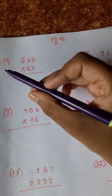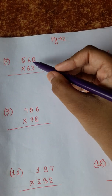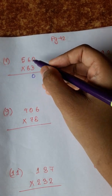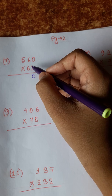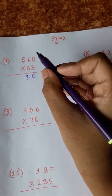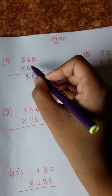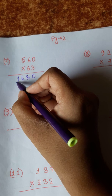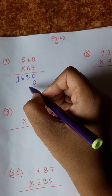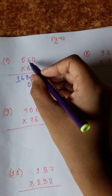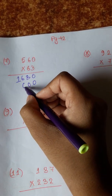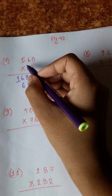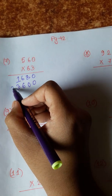Multiplication. This is the 7 number. 3 0s are 0. 6 3s are 18. 1, 5 3s are 15 plus 1 is 16. 6 0s are 0, 6 6s are 36, 3 5 6s are 30 plus 3 is 33.